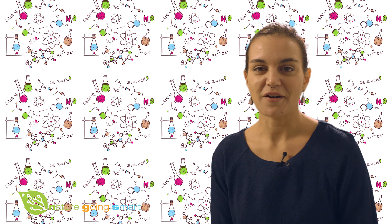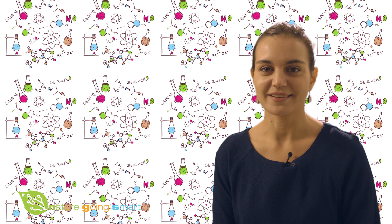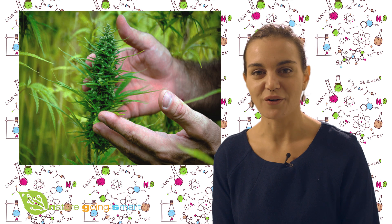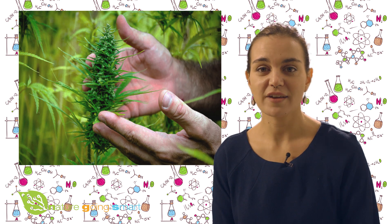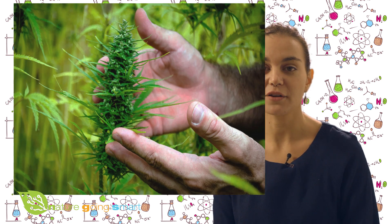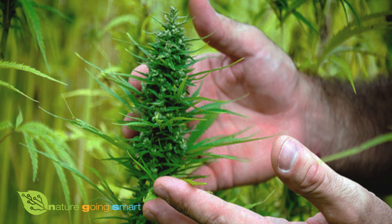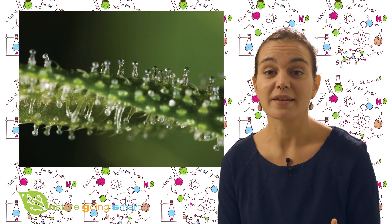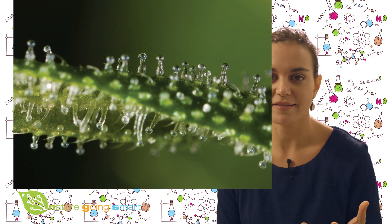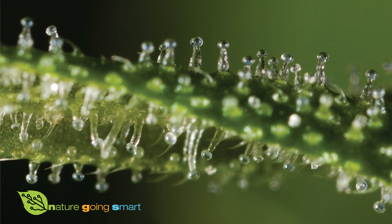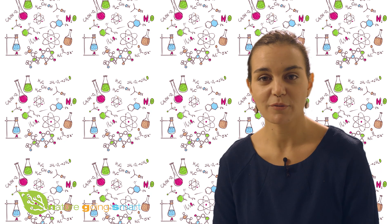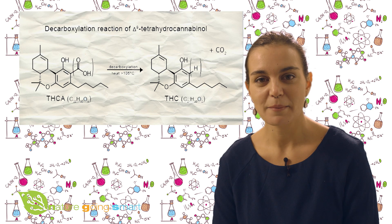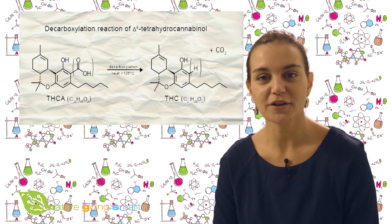The main constituent of the cannabis plant in its raw, unheated form is THCA, or delta-9-tetrahydrocannabinolic acid. In the cannabis plant, cannabinoids are synthesized and then stored in their acidic state. The peculiar chemical composition of cannabinoid acids makes them devoid of psychotropic effects.